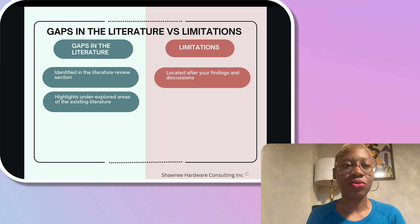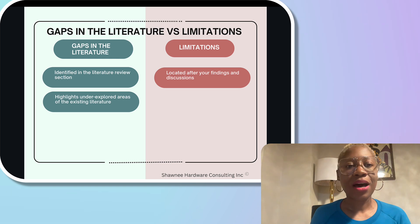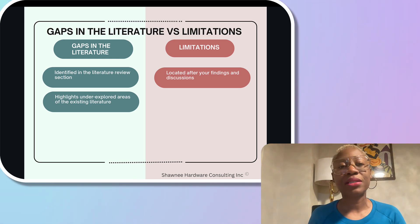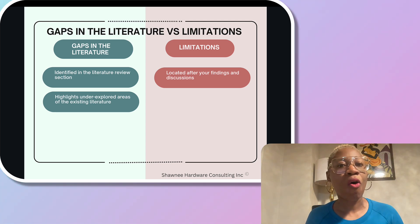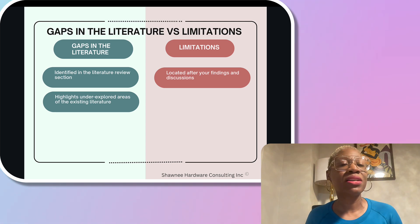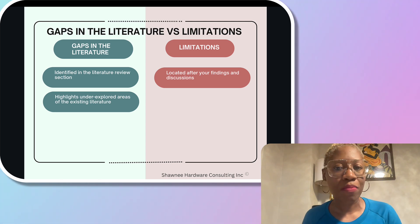I typically explain to my students that you have to identify the different shades of gray in the literature. After you've done that, you have to do a subsection that says gaps in the literature, where you say above I've identified all the nuances of the literature that I've reviewed. However, in this section, I'm going to identify areas that I did not see mentioned in the literature that is related to my research.